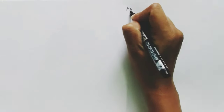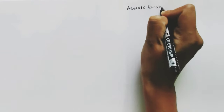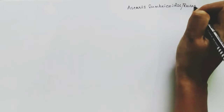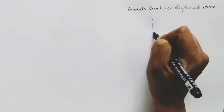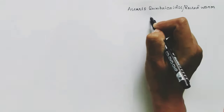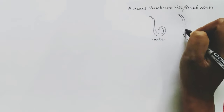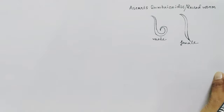In this video, we are going to talk about Ascaris lumbricoides life cycle. Ascaris is also called the roundworm. It causes Ascaris disease in the body of the human. The adult Ascaris looks something like this — the male has a curved tail and the female is straight.